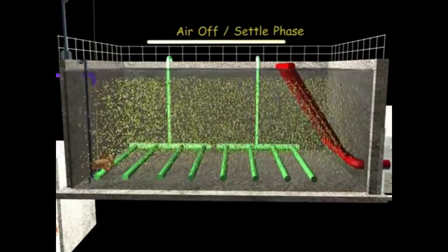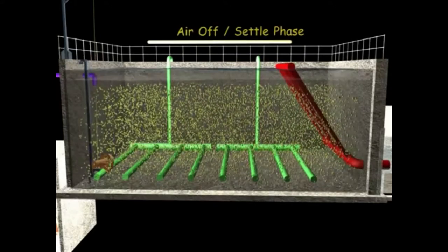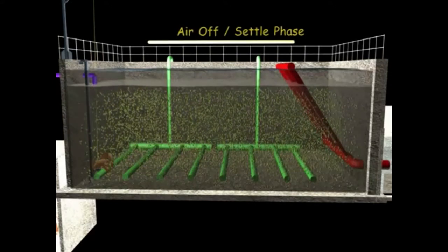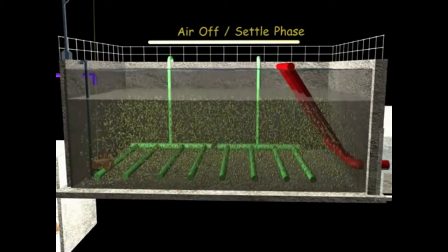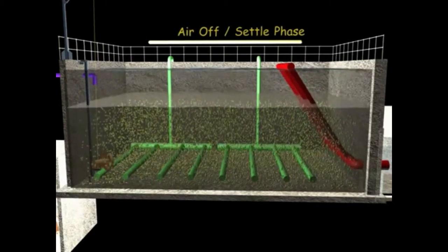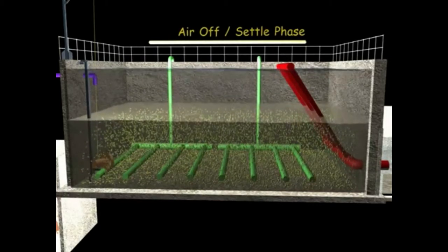Then comes the settlement stage. Blowers are turned off and solids are allowed to settle so they are separated from the water. This provides a clarified supernatant to be discharged as effluent. It takes adequate hours to completely settle all the solids.